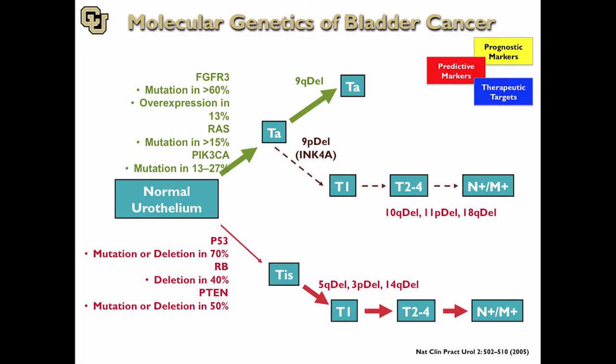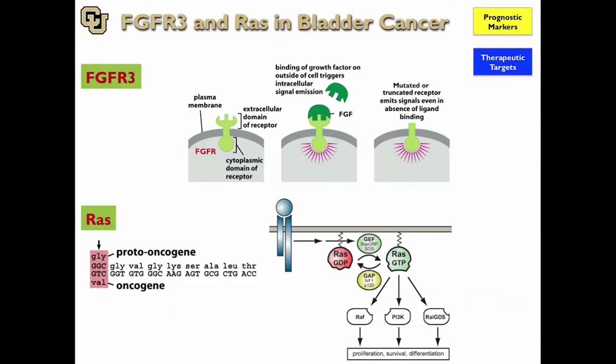I want to show you a couple of examples of genes that can be used in the clinic and how they're used. This is a molecular genetics of bladder cancer summary slide. There are some key players in the two major pathways of bladder cancer: the non-muscle invasive and the invasive pathways. The genes on the non-invasive pathway include FGFR3, RAS, and PI3-kinase. FGFR3 is a very important gene — you're going to come across it not only for therapeutics with targeted agents, but also for diagnostics.